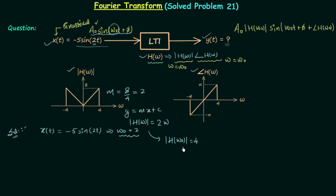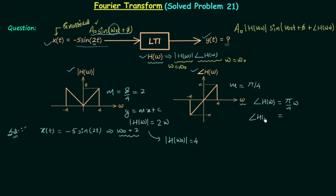Now we calculate ∠H(ω₀), the phase response at ω₀. Again we calculate the slope from the phase response plot, which equals π/4. The phase response equals (π/4) · ω, with intercept 0 since the line passes through the origin. At ω = ω₀ = 2, the phase response is ∠H(ω₀) = π/2.